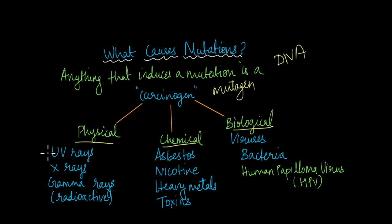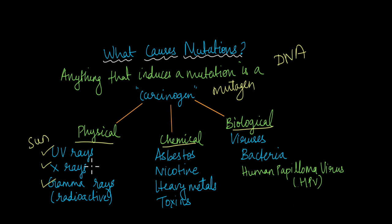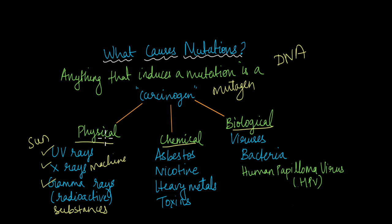Physical carcinogens are any type of rays that can cause cancer, like UV rays, X-rays, or gamma rays — UV rays from the sun, X-rays from the X-ray machine, and gamma rays from radioactive substances or radioactive isotopes. When these reach the cell in large quantities, they can lead to a lot of DNA mutations that can then cause cancer.